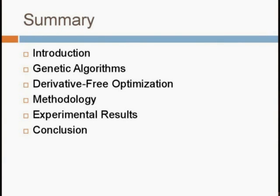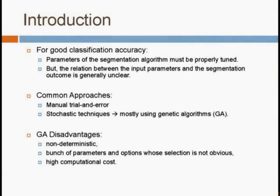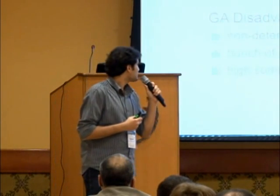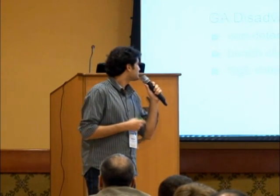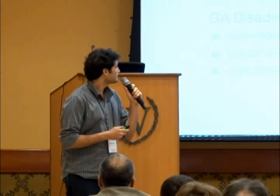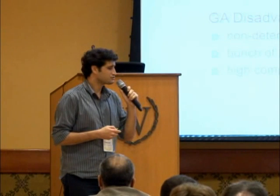What's the problem? For good classification accuracy, we need some parameters to be tuned, but the problem is that the relation of the input parameters and the segmentation outcome are not clear. The common approach is to use a manual trial and error process, and some stochastic techniques like genetic algorithms. But GA has some disadvantages: they are non-deterministic, they have parameters that also need to be selected, and they have a high computational cost.